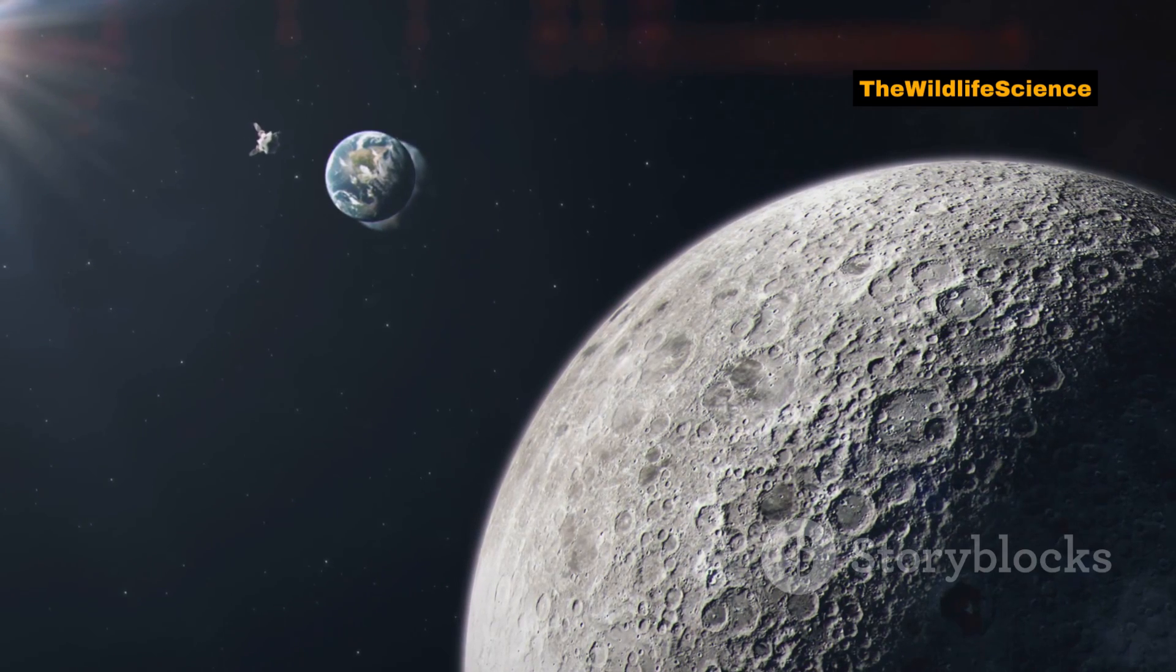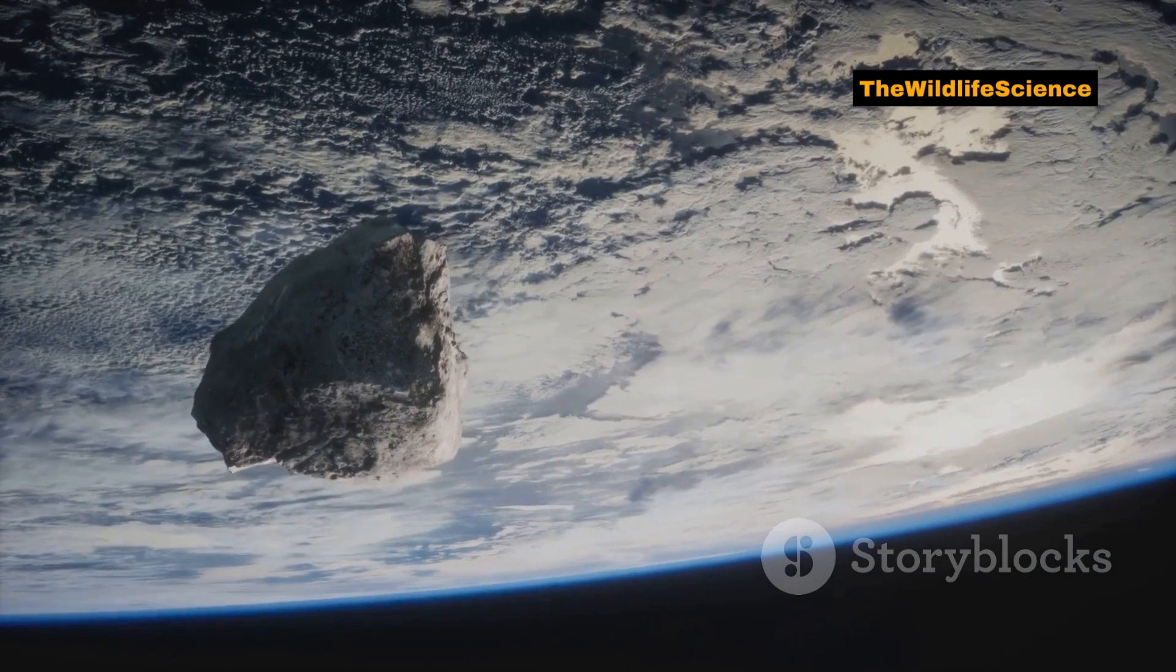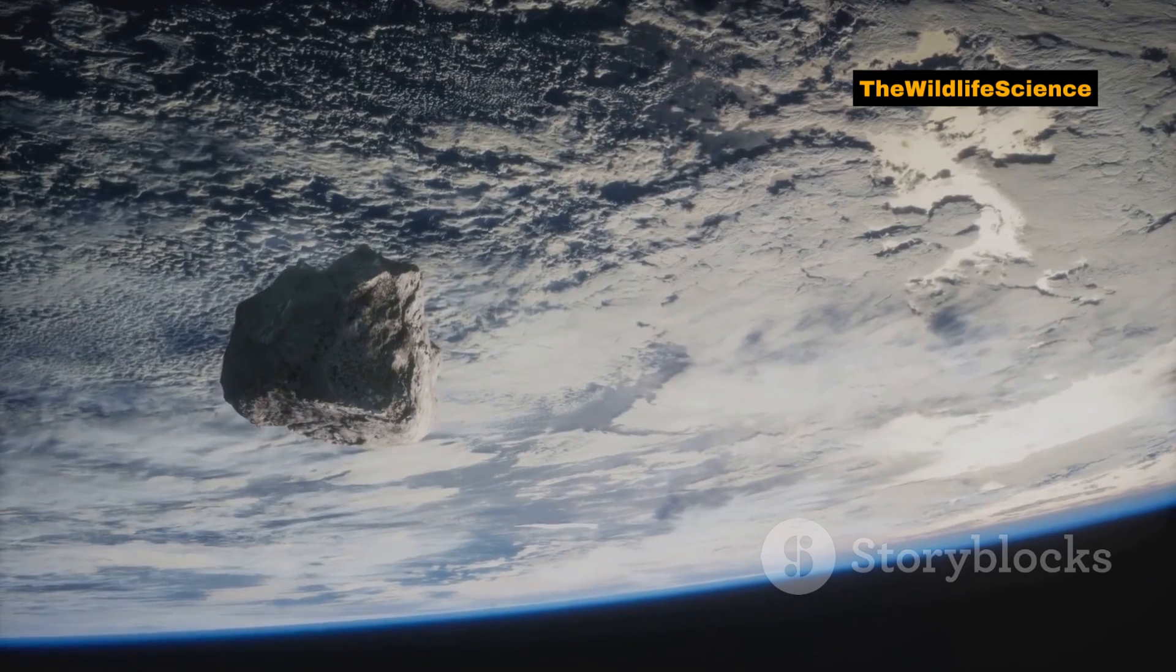This isn't the first time a quasi-moon has been discovered. In 2016, another temporary satellite, named 2016 HO3, was identified orbiting near Earth in a similar way.